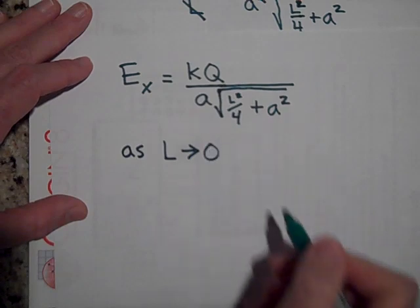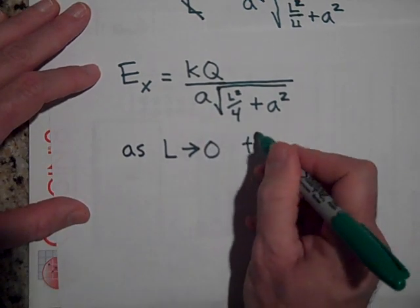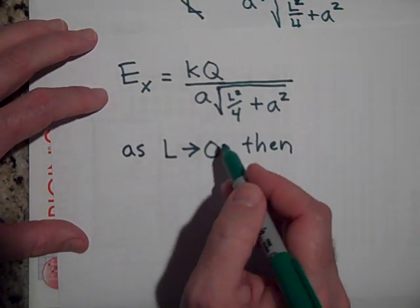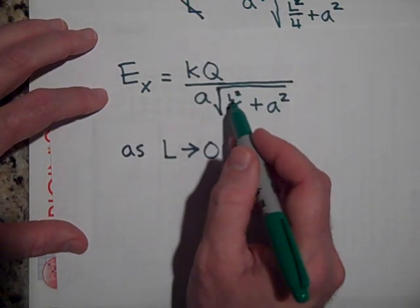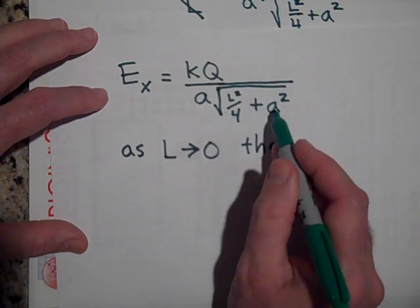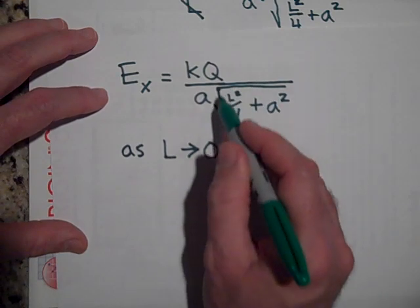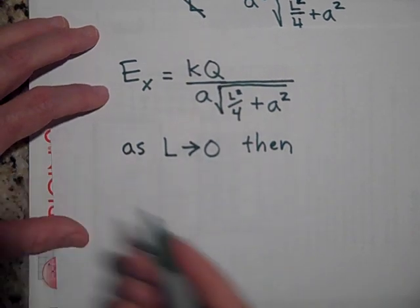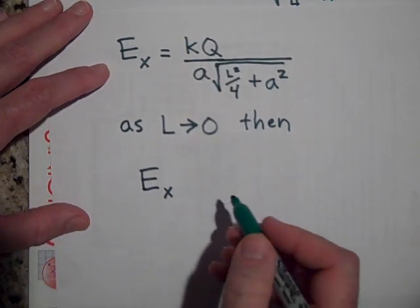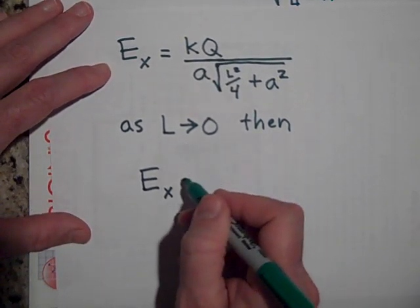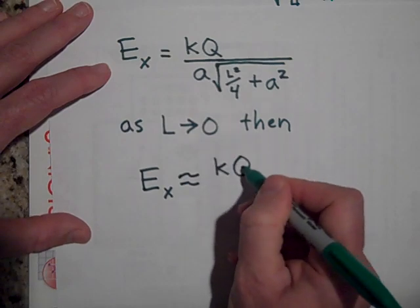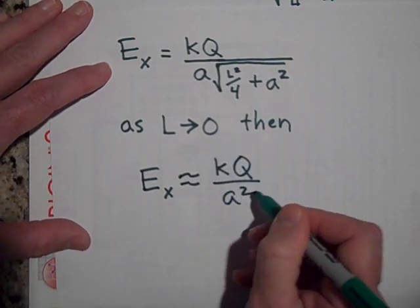As L approaches zero, let's see if we let L approach zero, then we're left with that term goes to zero and so this is going to just be A squared in the denominator in the square root. And so that's going to be sure enough, Ex will be approximately or, if we let, well we'll say approximately equal to kQ over A squared, just what we should get.